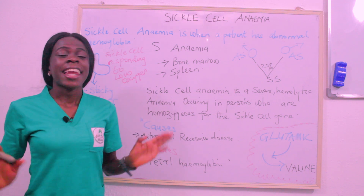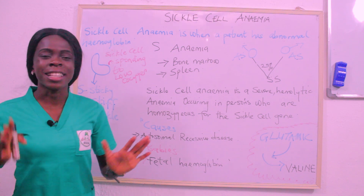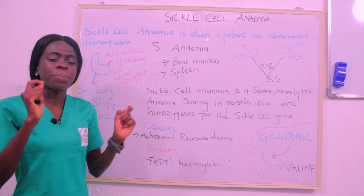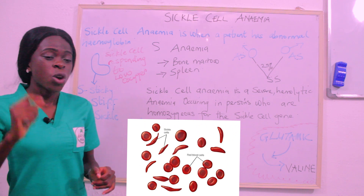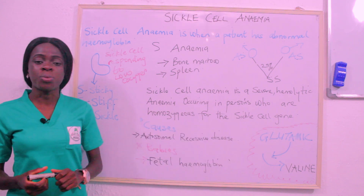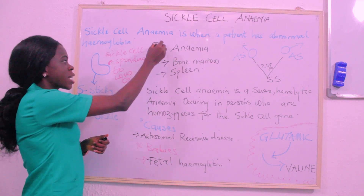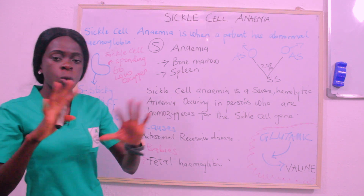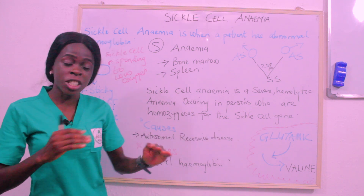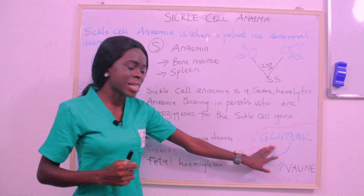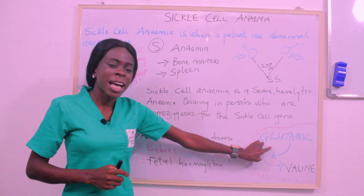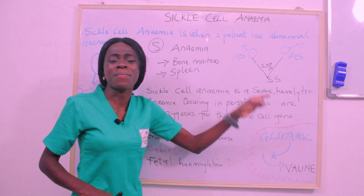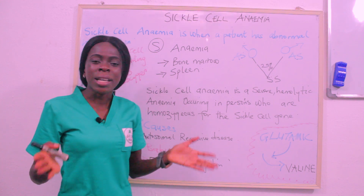Alright, welcome back. Today we're going to be talking about sickle cell anemia. Sickle cell anemia is when a patient has abnormal hemoglobin, known as Hemoglobin S. Why is this hemoglobin abnormal? In a chain of hemoglobin, there is what we call glutamic acid, which takes the sixth position. This glutamic acid is displaced by valine — valine comes and takes the position of glutamic acid, and that makes our hemoglobin abnormal.